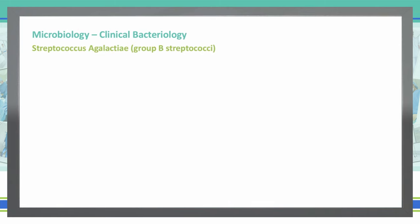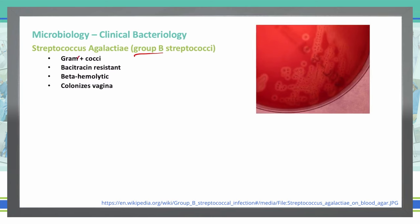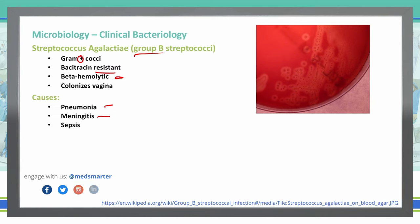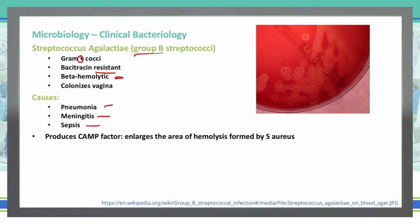Streptococcus agalactiae, or Group B strep, is a gram-positive cocci that is resistant to bacitracin, is beta-hemolytic, and colonizes the vagina quite often. It can cause pneumonia, meningitis, and sepsis. Its virulence factor is the CAMP factor — do not confuse this with cyclic AMP. CAMP here refers to the authors who created the test and has nothing to do with cyclic AMP.